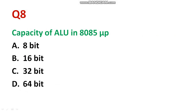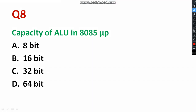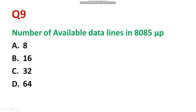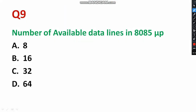Question number eight: 'The capacity of the arithmetic and logic unit (ALU) in the 8085 microprocessor.' The capacity of the ALU in the 8085 is 8 bits, not 16 bits — this is a commonly confusing point. The right answer is 8 bit. Please remember this.